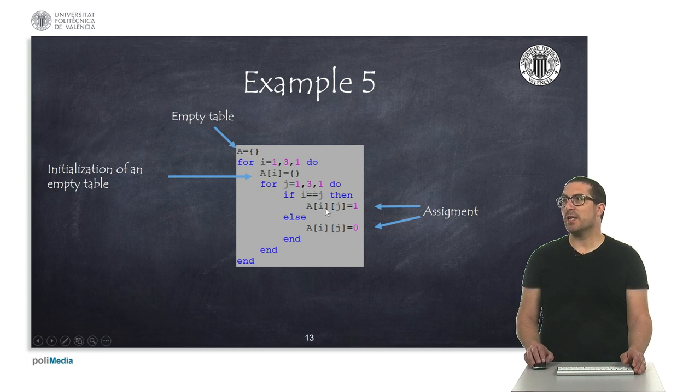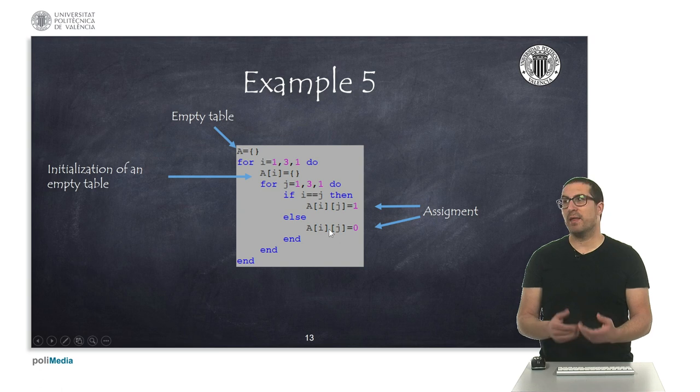And in this case, as before, if both i and j are equal, then I am assigning one, and otherwise, then I am assigning zero. So this is the way I could assign the element i of the variable a, and then inside that element, I have another table with the element j.